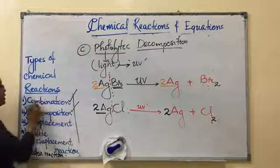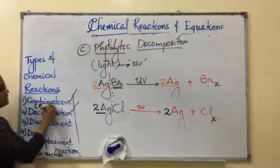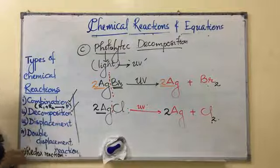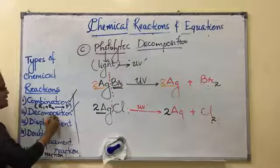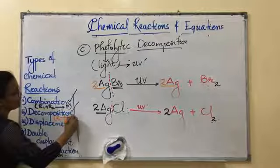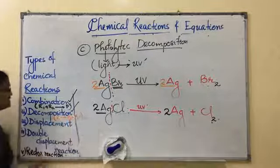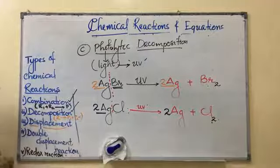So we discussed about combination. Combination means what? Two or more reactants combine to form a single product. Decomposition means what? A single reactant is converted into 2 or more products. That is decomposition. Now the third category, third type of reaction we have to discuss.